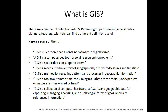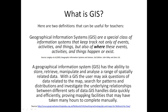GIS is a method for revealing patterns and processing geographic information. GIS is a tool to automate time-consuming tasks that are too tedious, expensive, or inaccurate if performed by hand — so computerization and automation is what GIS is about according to this definition. And one more: GIS is a collection of computer hardware, software, and geographic data for capturing, managing, analyzing, and displaying all forms of geographically referenced information. So GIS is data, hardware, software, and human combined.